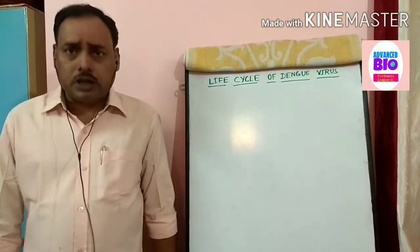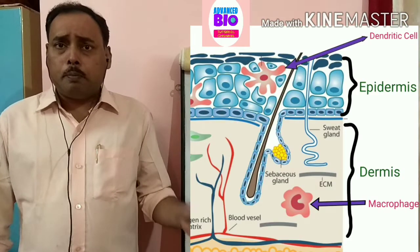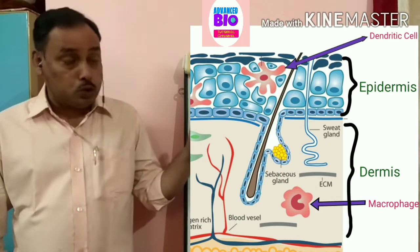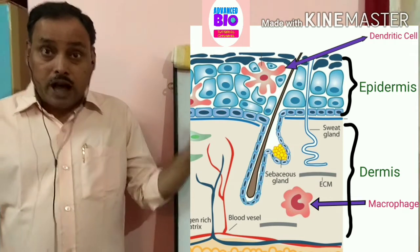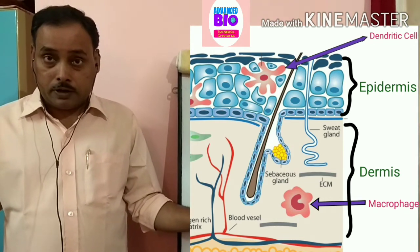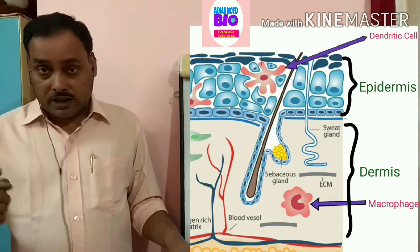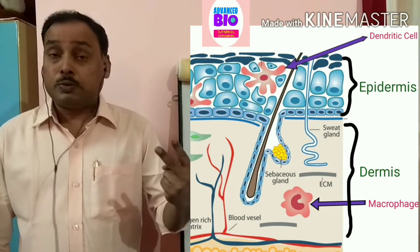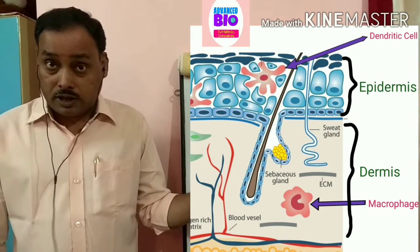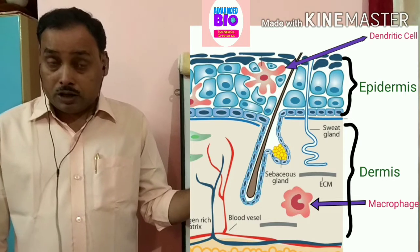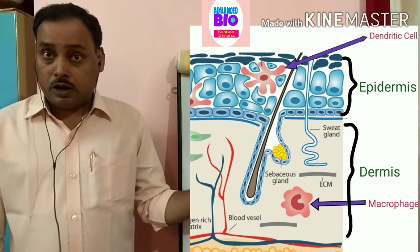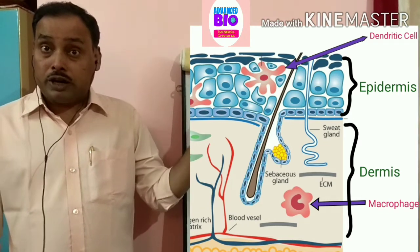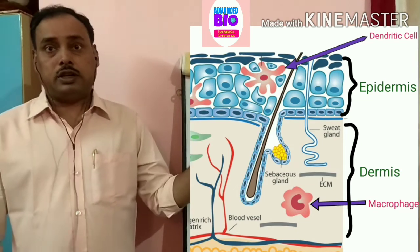Now you can see the section of mammalian skin on this screen. There are basically two layers: the epidermis, the outer layer, and the dermis, the inner layer. At the dermis level you can see the macrophage, and at the epidermis layer you can see the dendritic cell.